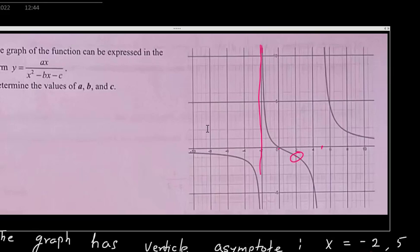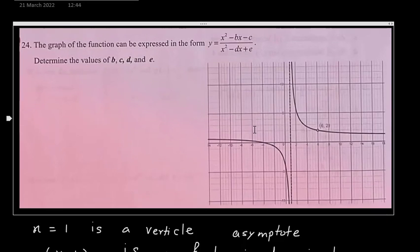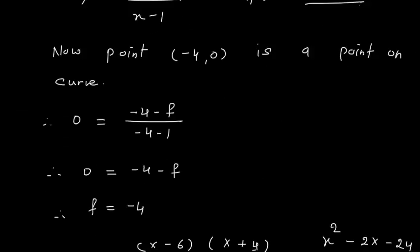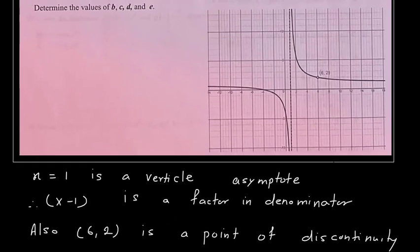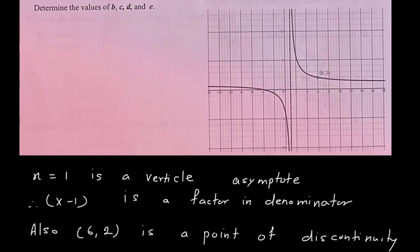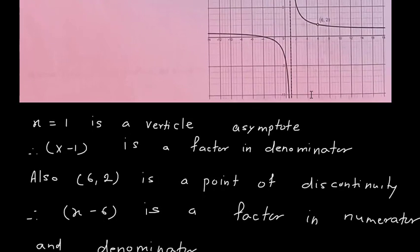Now I'd like to discuss one more problem. The graph of the function can be expressed in the form y = (x² - bx - c) / (x² - dx + e). We have to find b, c, d, and e. Again, I will find the vertical asymptote from the graph. The vertical asymptote is at x = 1, so (x-1) is a factor in the denominator.